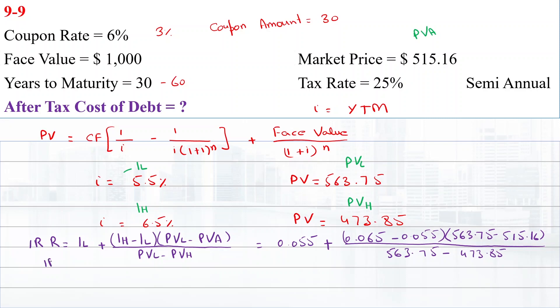The IRR is 6.04%. Since we're using semi-annual compounding, this rate is for half a year. For the yearly rate, we multiply the IRR by 2, so the cost of debt is 12.08%.